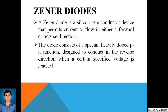The next protection device is the zener diode. A zener diode is a silicon semiconductor device that permits current to flow in either a forward or a reverse direction. Regular p-n junction diodes do not allow current flow in reverse bias, but a zener diode is a special heavily doped p-n junction designed to conduct in the reverse direction also when a certain specified voltage is reached.